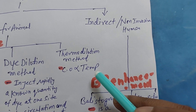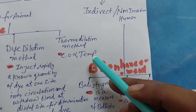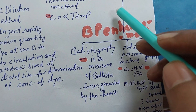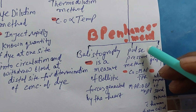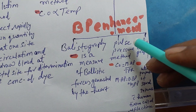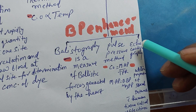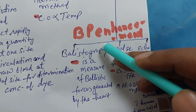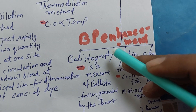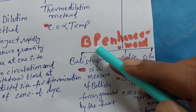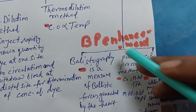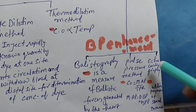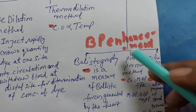The indirect or non-invasive methods used in human beings are: first, ballistography; second, pulse pressure; and third, echocardiography. These are remembered by the mnemonic 'BP Enhancement' — B means ballistography, P stands for pulse pressure, and Enhancement means echocardiography.